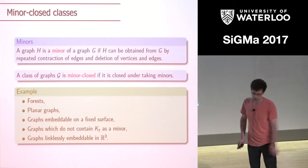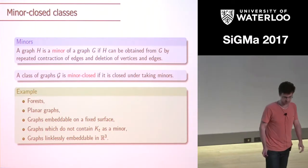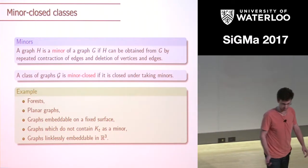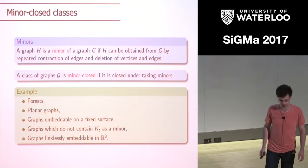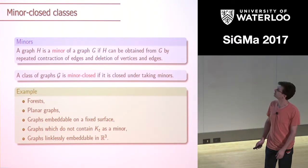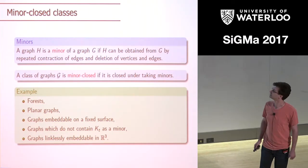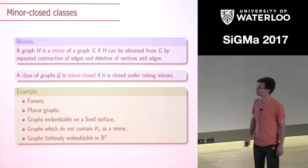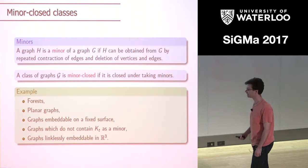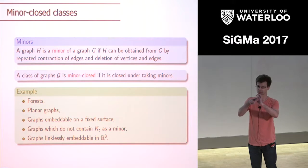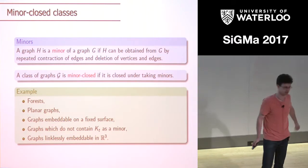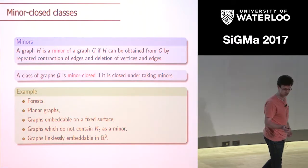Interesting classes of graphs which are minor-closed include forests, graphs embeddable on a surface, and importantly for our discussion of Hadwiger's conjecture, graphs which exclude some complete graph as a minor. One more exotic example, which won't appear elsewhere today, is graphs which can be embedded in three-space so that no two cycles link.